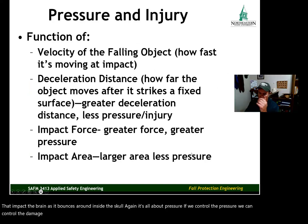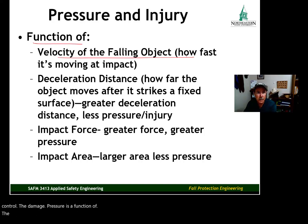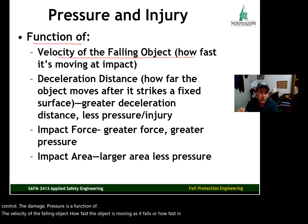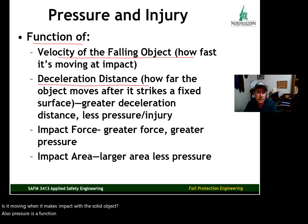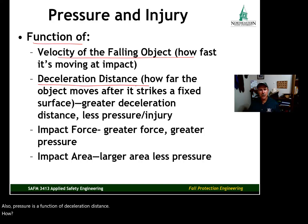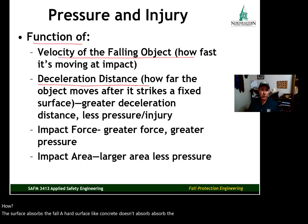Pressure is a function of the velocity of the falling object — how fast the object is moving as it falls, or specifically how fast it's moving when it makes impact with the solid object. Also, pressure is a function of deceleration distance: how well the surface absorbs the fall. A hard surface like concrete doesn't absorb the fall, so there's very low deceleration distance, very high pressure, very high forces.